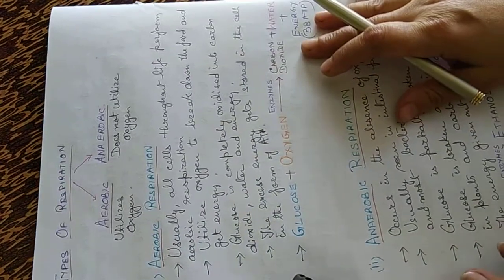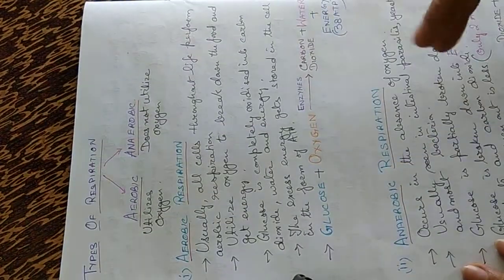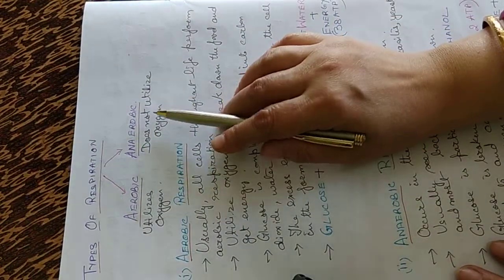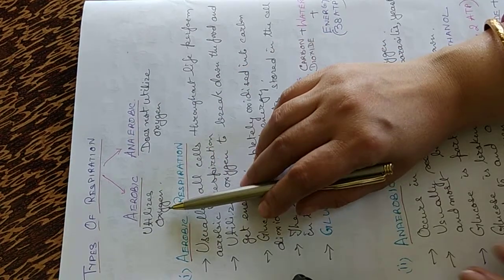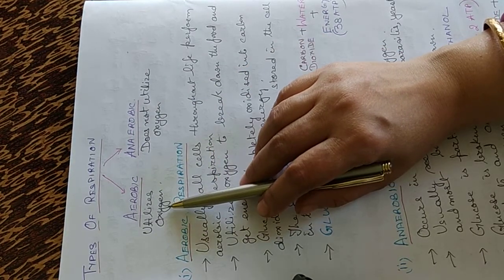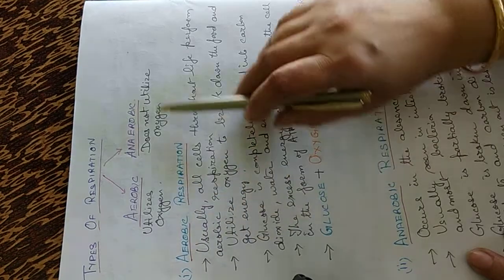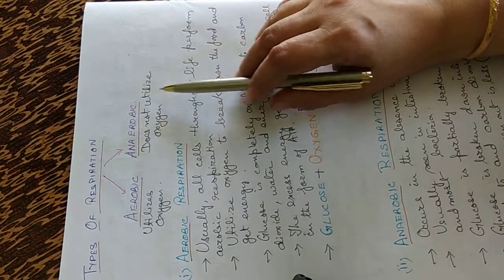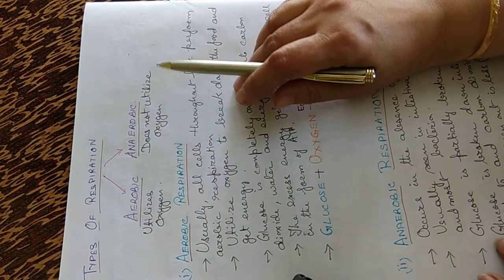Now types of respiration. There are two types of respiration we know: aerobic and anaerobic. In aerobic, oxygen is utilized and in anaerobic there is no utilization of oxygen.